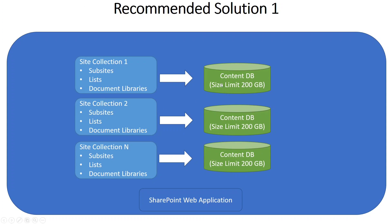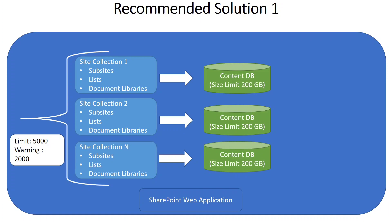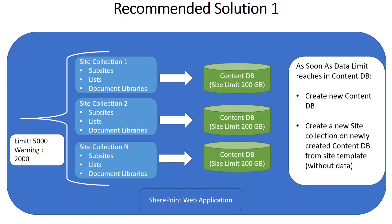All data from site collection one is saved on content database one, and all data from site collection two will be saved on content database two — and so on for every site collection. Since you have created multiple content databases, the 200 GB limit will be reached much more slowly compared to the previous case. The 5,000 site collections limit — with a warning at 2,000 — will be sufficient. As soon as the data limit is reached in a content database, you will create a new content database and a new site collection for users, without existing data.